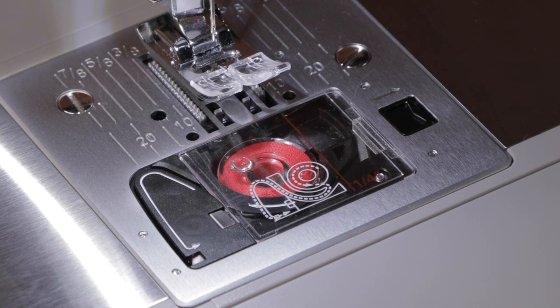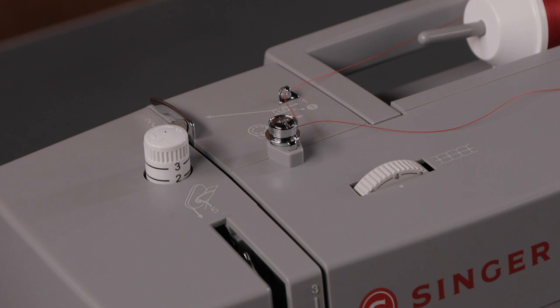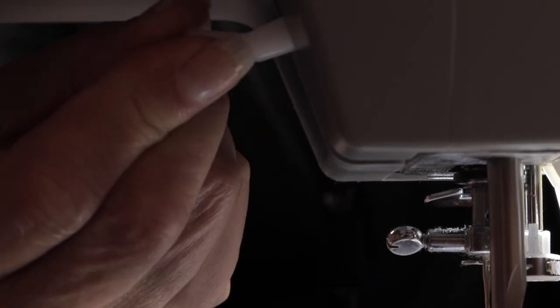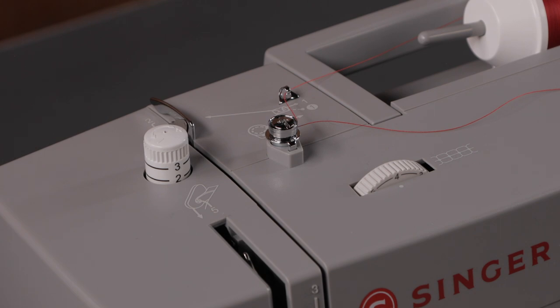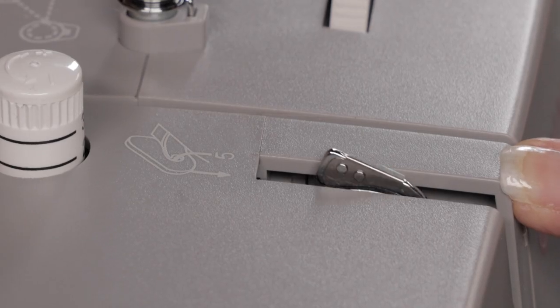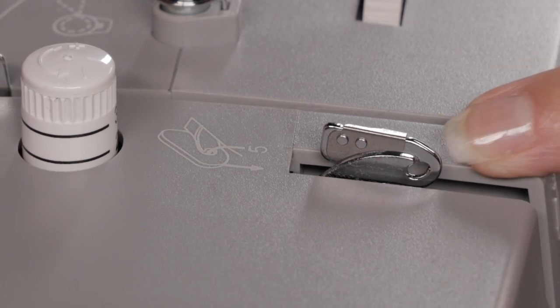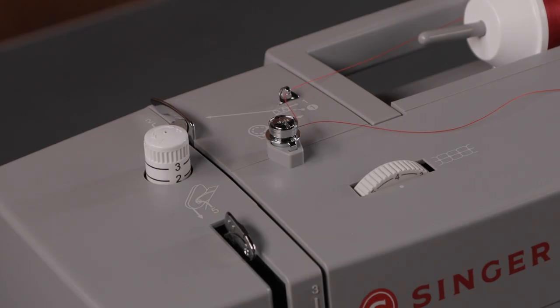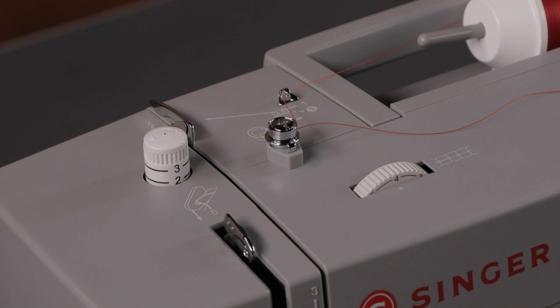Now we're ready to thread the top of the machine. There's two things you want to check before you get started. One is to double check to make sure your presser foot lifter is raised. That's very important or your machine won't thread properly in the tensions. The other is to make sure that your take-up lever is visible. If it isn't, turn the hand wheel toward you until you can see the take-up lever here in its highest position. Now we're ready to thread the top of the machine.